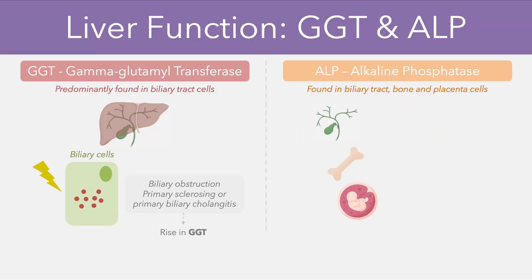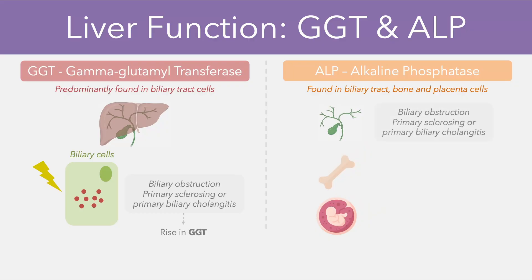Looking at the individual pathologies, damage to the biliary cells might be caused by the same processes we mentioned for GGT. In terms of osteocyte damage, this might be caused by conditions such as Paget's disease of the bone, where there's a problem with renewal of bone cells, or osteomalacia, where there's softening of the bone often due to a lack of vitamin D or calcium. Finally, patients who are pregnant might also have a rise in ALP due to the growth of the placental cells.